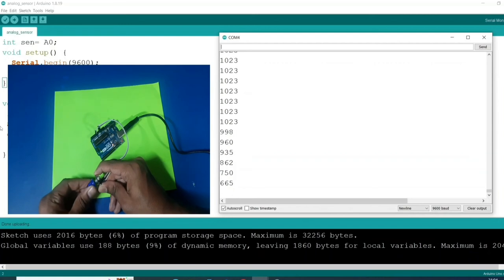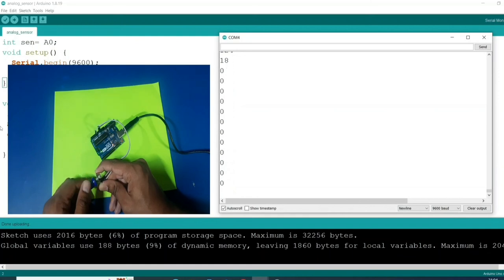So as I told you earlier we will get 1024 values, but here we are getting 1023. Don't be confused with this. We are getting 1024 values including 0 to 1023. Total value will be 1024.